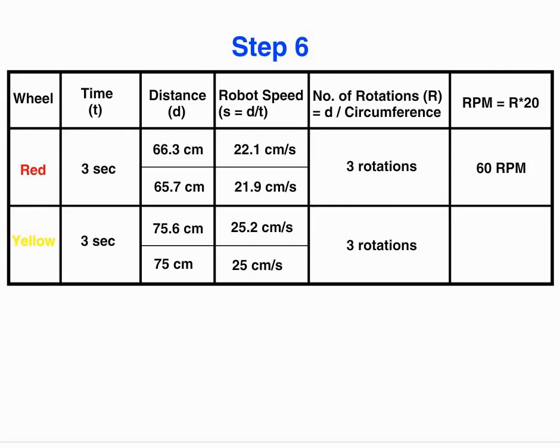We know from our last experiment that the circumference of yellow wheel is 25.1 centimeters, which means in three seconds we have taken three rotations. Three seconds, three rotations, that means 60 seconds, 60 rotations, which means the RPM is still 60. So RPM of the motor is not changed, but the speed of the robot is changed by changing the size of the wheel.